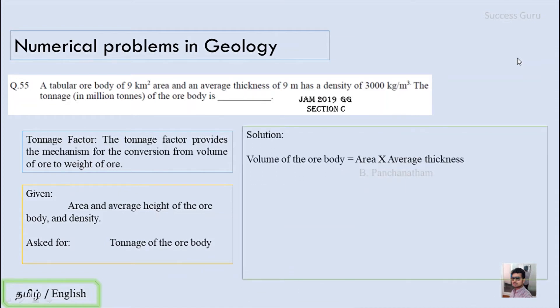To solve this, the first step is to calculate the volume of the ore body. Volume equals area multiplied by height (average thickness). Substituting the values, the area is 9 km², which we convert to meters since thickness is in meters — 1 km² equals 10⁶ m². So the volume is 81 × 10⁶ cubic meters.